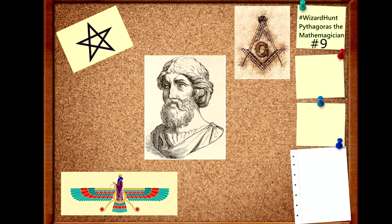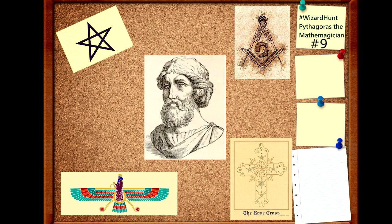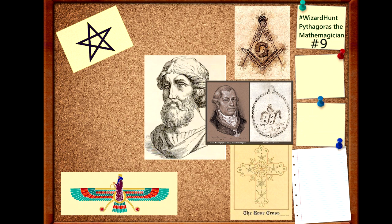Rosicrucianism, which is also a secret society that practices magic, used Pythagoras's symbolism. Robert Fludd believed his own musical writings to have been inspired by Pythagoras. Also Adam Weishaupt, the founder of the Illuminati, which is a secret society that also practices magic, was a strong admirer of Pythagoras. In his book Pythagoras, he advocated that society should be reformed to be more like Pythagoras's commune at Croton.